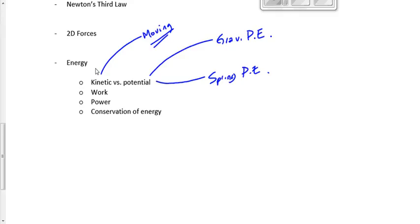Kinetic energy, the energy of motion, can be found by the equation one-half mv squared. Mass has to be in kilograms, and speed has to be in meters per second. So if you've got kilometers per hour or whatever, convert it to meters per second and you're good to go.